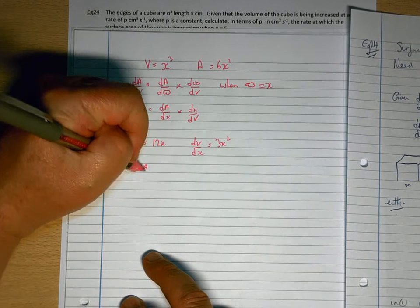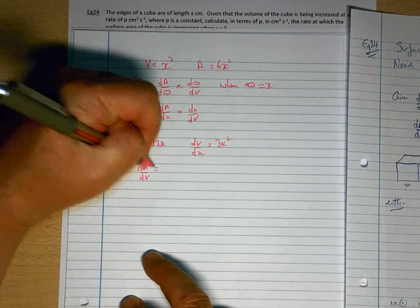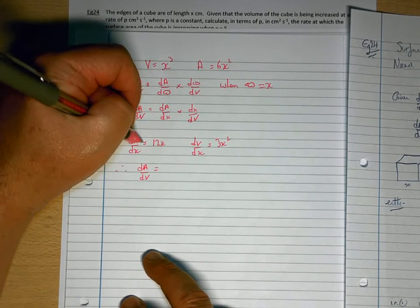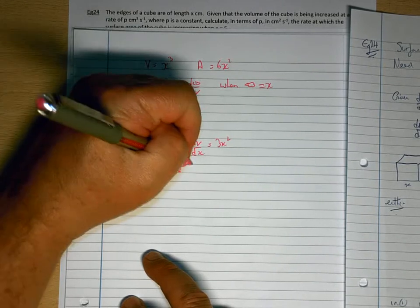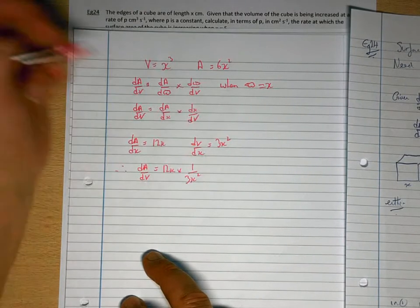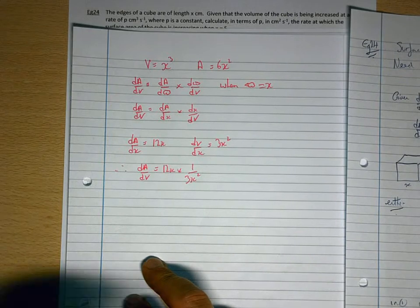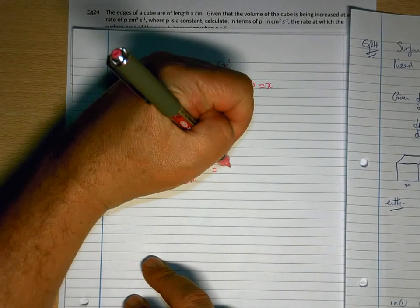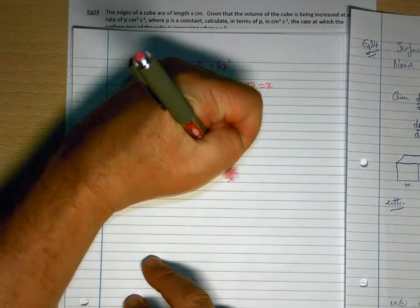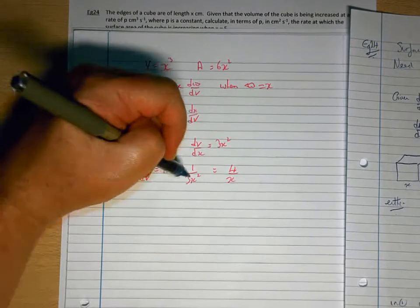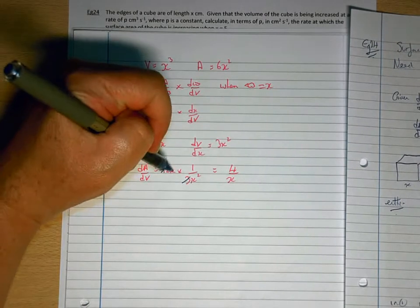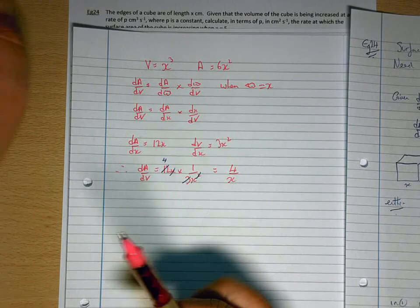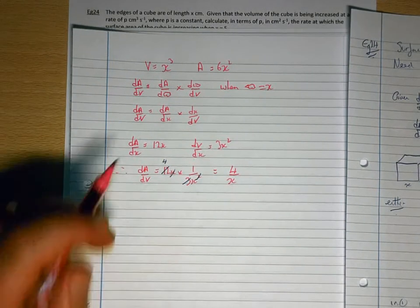dA/dV will be dA/dx, which is 12x, times dx/dV, which is 1 over 3x squared. So that would be 4 over x. So the 3 goes into that 4 times, and that x cancels as well one of those there. So dA/dV is 4 over x.